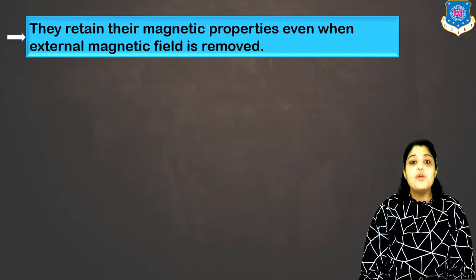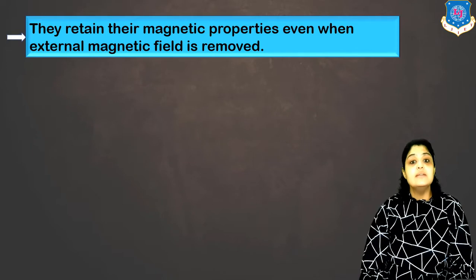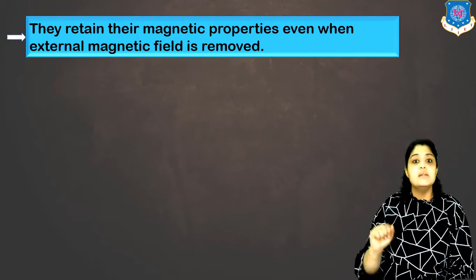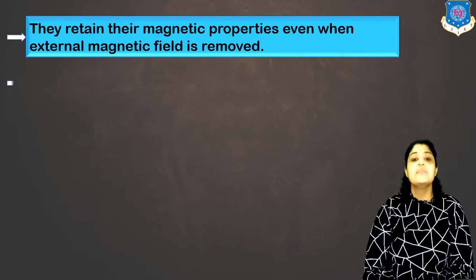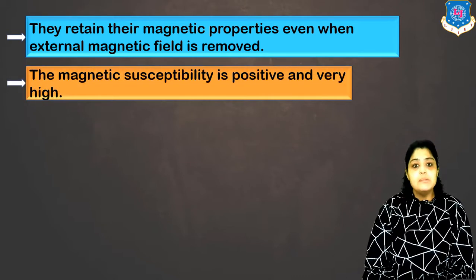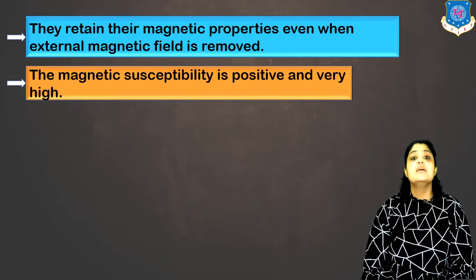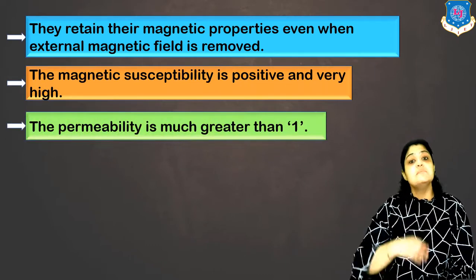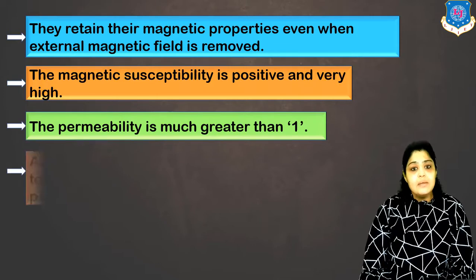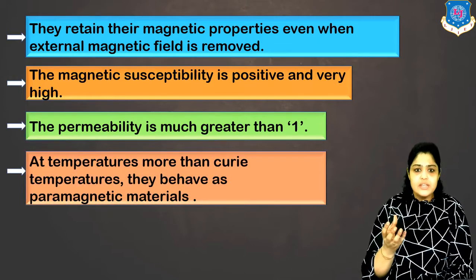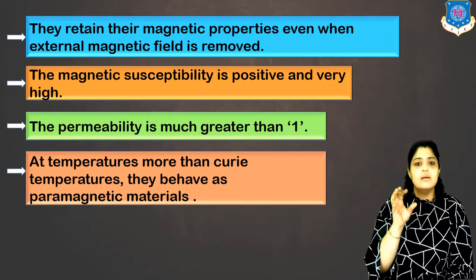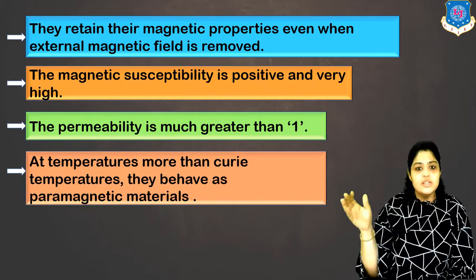The magnetic properties are retained even if the magnetic field is removed — they will still behave as permanent magnets. The value of magnetic susceptibility is positive and very high. The value of permeability is much greater than one. At temperatures above the Curie temperature, which varies for different materials, magnetism becomes temperature dependent.